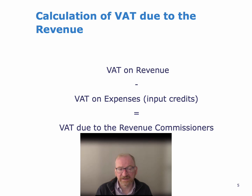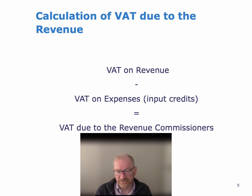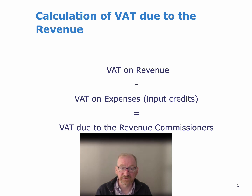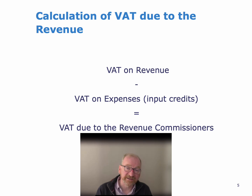So the calculation of VAT due to the revenue is: VAT on revenue minus VAT on expenses, including purchases, equals the VAT due to the revenue commissioners. Obviously this is a huge simplification of the VAT system — there's a lot more to it — but this gives you a quick introduction to VAT. It also needs to be remembered that in financial statements, sales and purchases that you will see in the income statement are VAT exclusive. So we don't include VAT in the sales, purchases, and expenses that you see in the income statement.